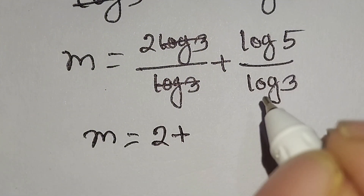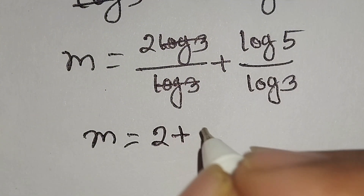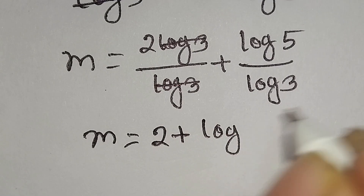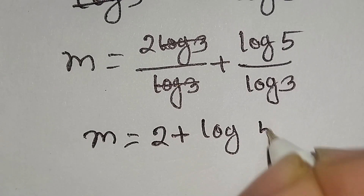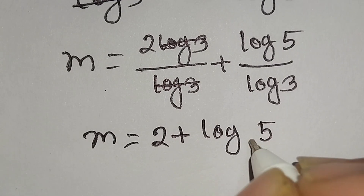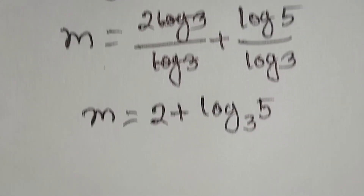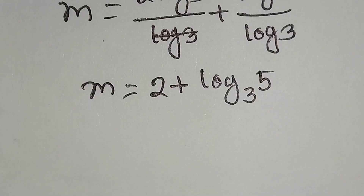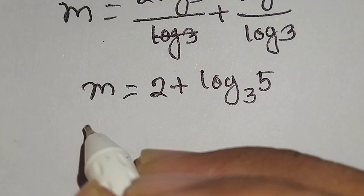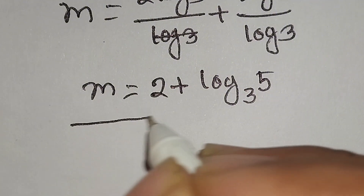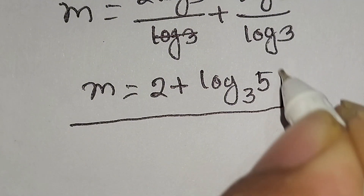We can write log 5 over log 3 as log 5 to the base 3. So the final answer is m is equal to 2 plus log base 3 of 5.